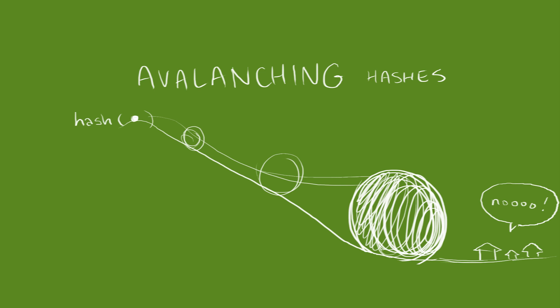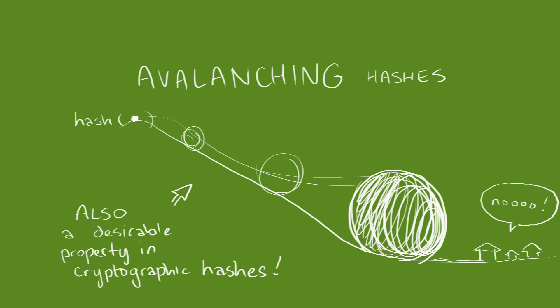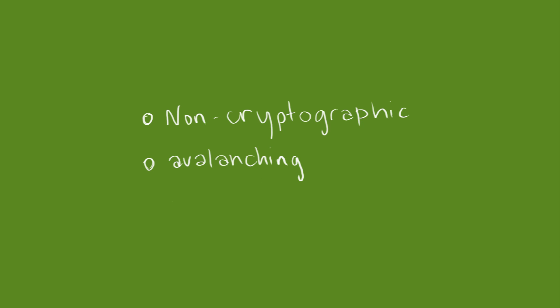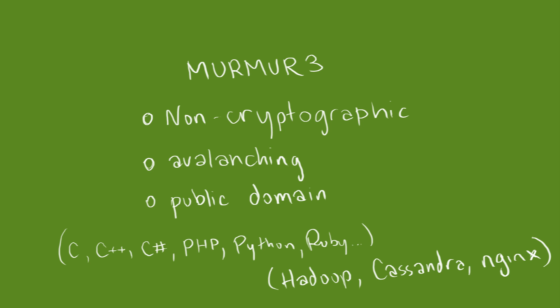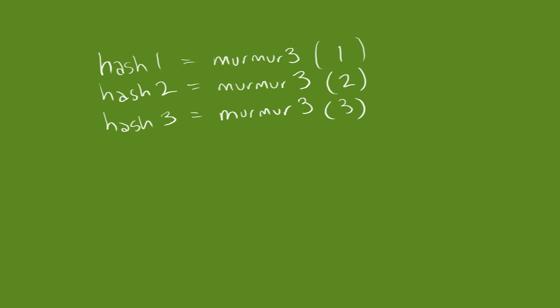This avalanche effect is also a desirable property in cryptographic hashes. A common hash used for this purpose is the non-cryptographic, well-avalanching, public domain Murmur3, implementations of which exist for most modern languages, and which has appeared in numerous open source products, including Hadoop, Cassandra, and Nginx. It also takes a seed value, so you can create dozens of different hash functions out of Murmur3.